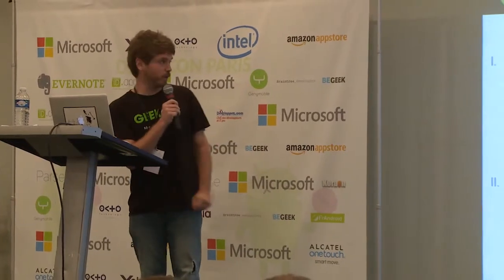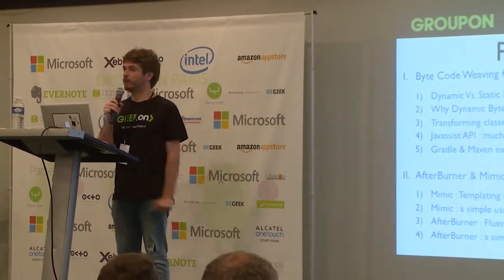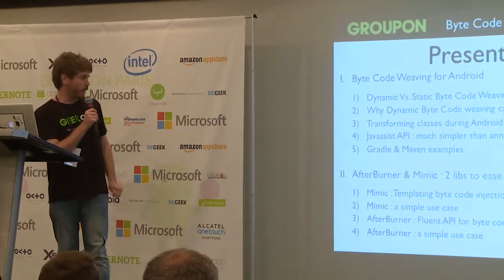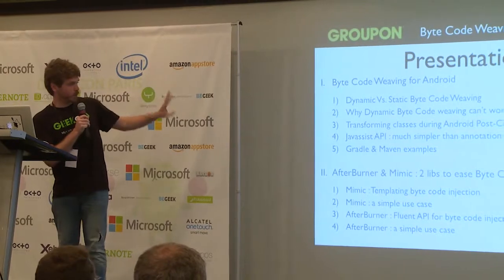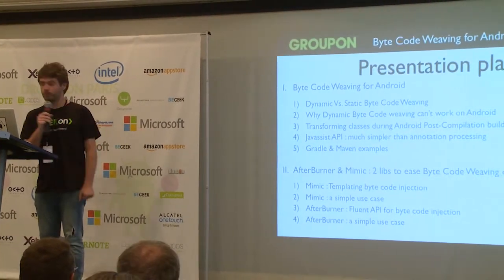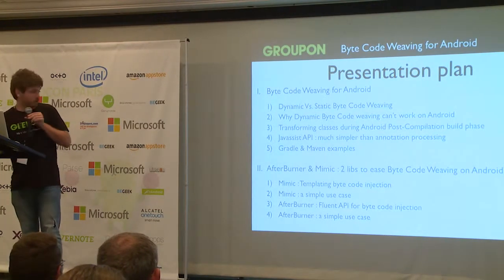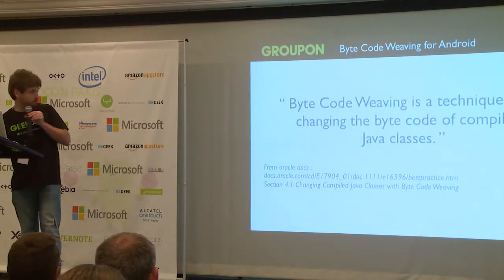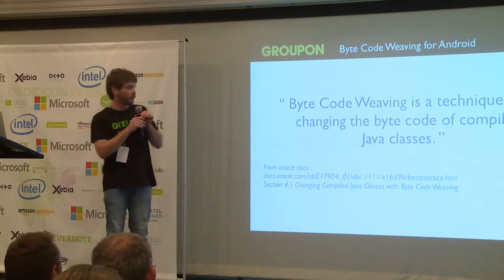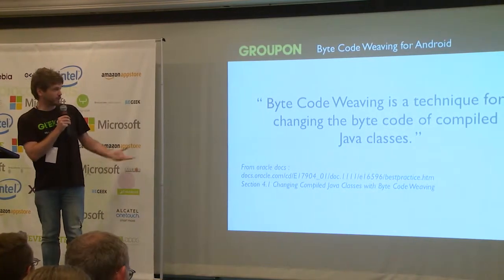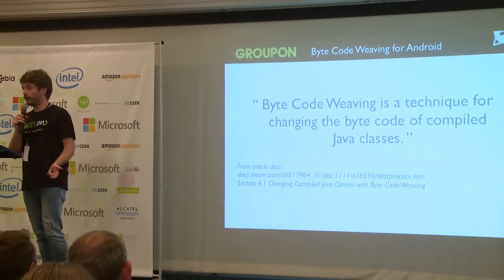Here is the presentation plan for today — we'll move quickly as we don't have much time. We're going to cover the concepts of bytecode weaving on Android and why it's different from Java bytecode manipulation, then go into Android-specific details, and present a few libraries based on these technologies. So, what is bytecode weaving? As defined by Oracle or Sun, it is a technique for changing the bytecode of compiled Java classes.